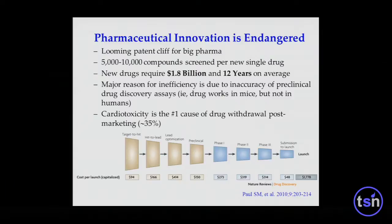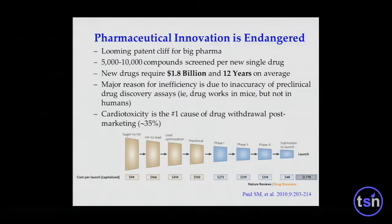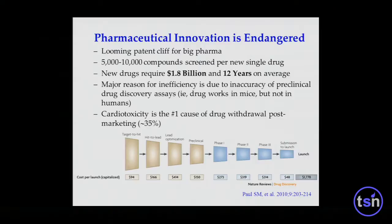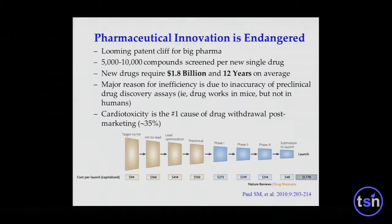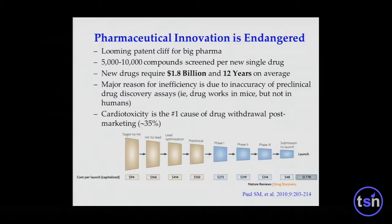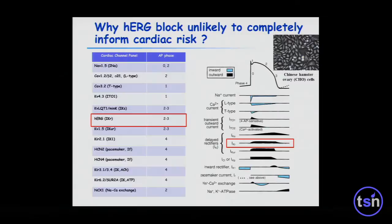I want to shift to how we do this for drug discovery. Pharmaceutical innovation is endangered — it takes about $1.8 to $2 billion on average and 12 years to go from beginning to end in drug development. A major reason for inefficiency is inaccuracy of preclinical drug discovery assays — drugs that work in mice don't work in humans. Another reason is that cardiac toxicity is the number one cause of drug withdrawal post-marketing, accounting for about 35%.